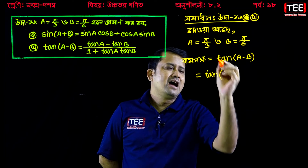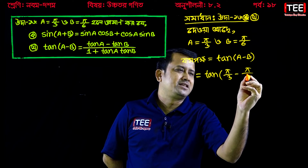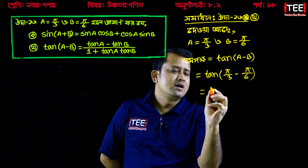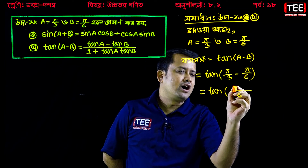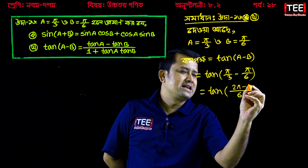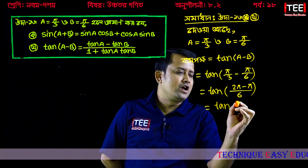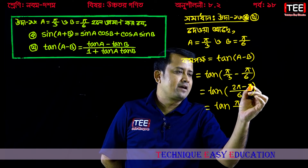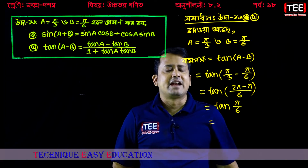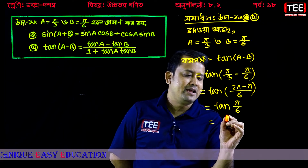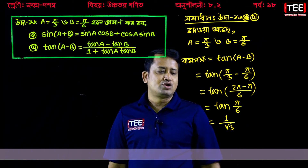We have pi by 3 minus pi by 6. That gives us 2pi minus pi over 6, which is pi by 6. Then we have 1 by root 3. Tan(pi by 6) is 1 by root 3.